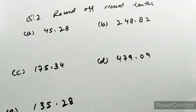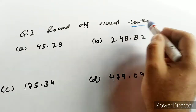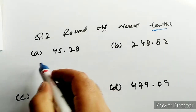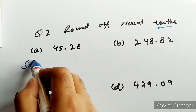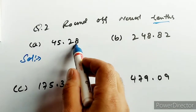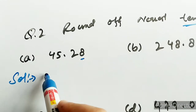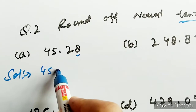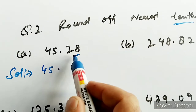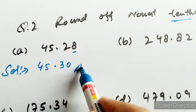यह आ गया जी आपका question number 2। इसमें आपको करना है tenths — मतलब point के बाद जो दूसरा digit है उसको आपने round off करना है। तो देखे यहां से solution — इसमें 8 को करना है। यह 8 है — 5 से ज़्यादा है — तो plus 1 करो, तो यह हो जाएगा 3 और इसकी जगा 0। Answer।